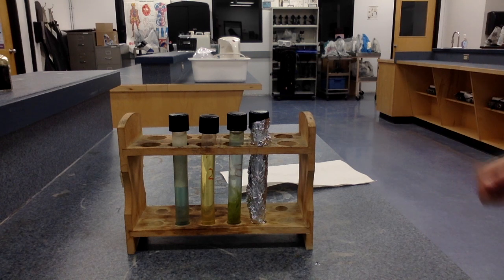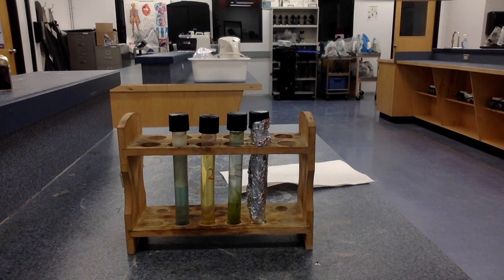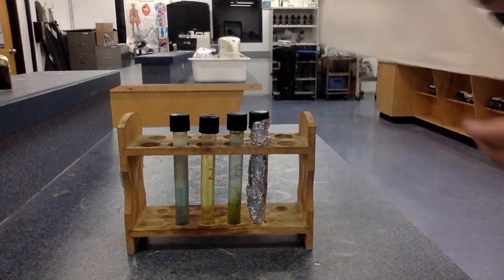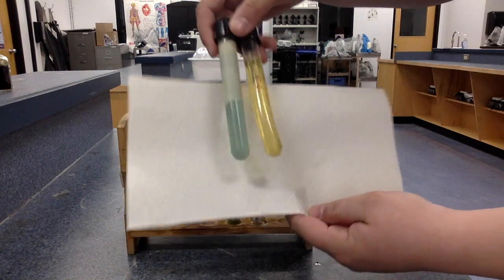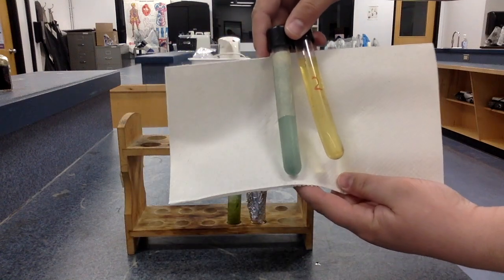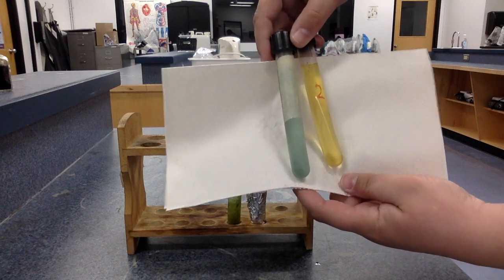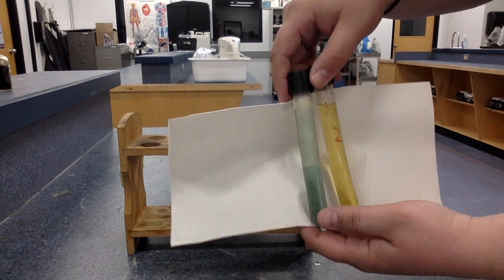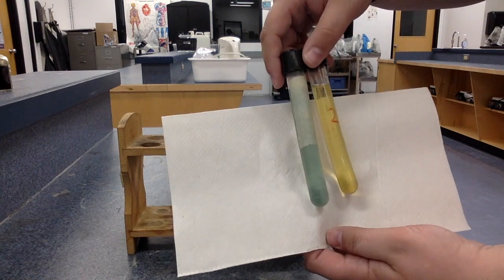Okay, so our test tubes have sat overnight and we're going to take a look at what they look like today. First of all, we've got test tubes one and two and I'm just going to hold them up against this white background so you can see the color better. Test tube one - still that greenish, almost blue color. Test tube two - still yellow.